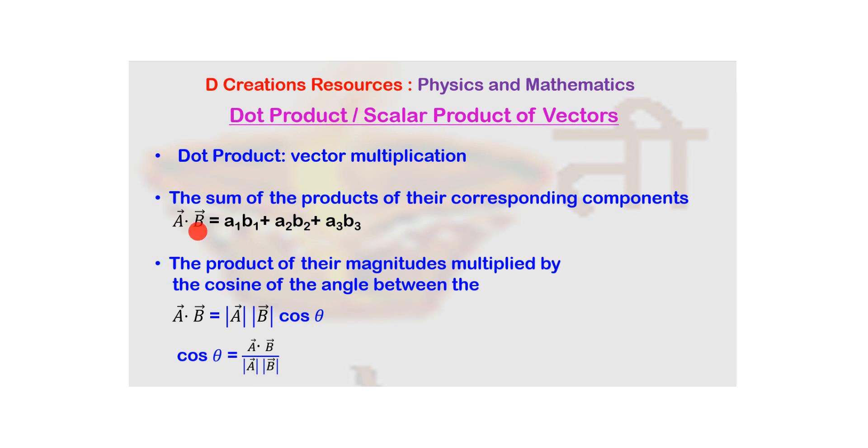Now what is the procedure of doing a dot product? Let us consider a vector a bar which we will say is a1 i cap plus a2 j cap plus a3 k cap. And similarly let there be vector b bar which is b1 i cap plus b2 j cap plus b3 k cap.